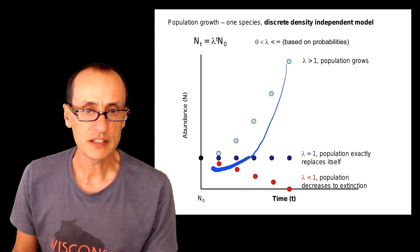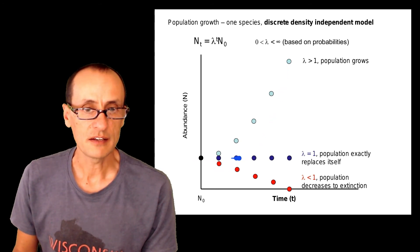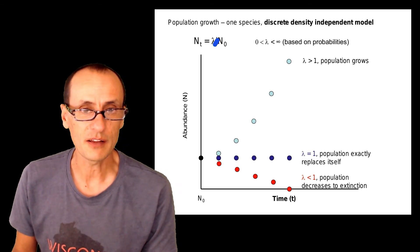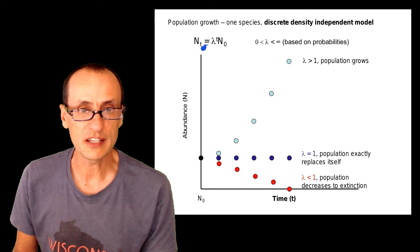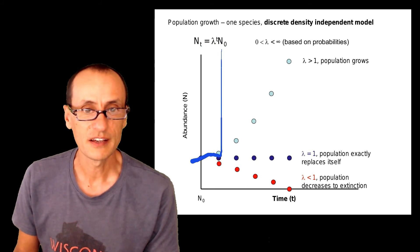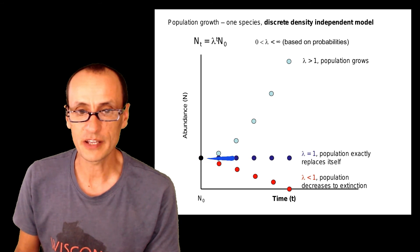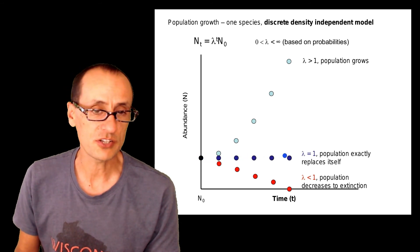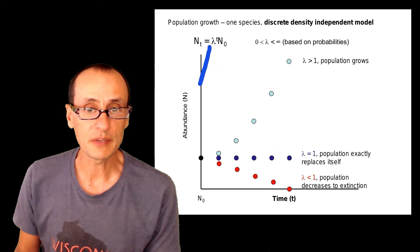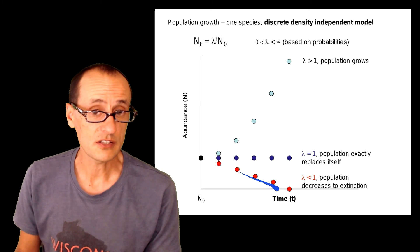If lambda is zero, then zero to whatever power is one, is one of the weird things about logarithms, and so the N at time t is just equal to whatever N you start with. And if it starts here, no matter how many other generations you add, the population exactly replaces itself here. On the other hand, if lambda is less than one, the population is going to go to zero.